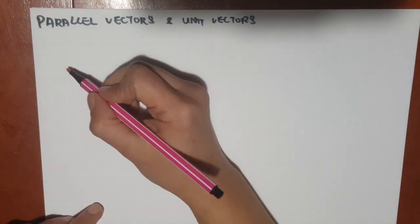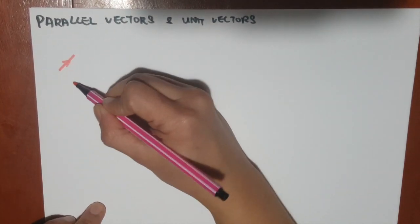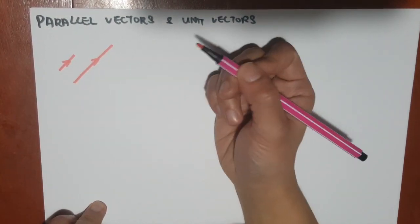This unit is about parallel vectors and unit vectors. And as we learned just now, parallel vectors could be of different lengths as long as they are heading the same direction.